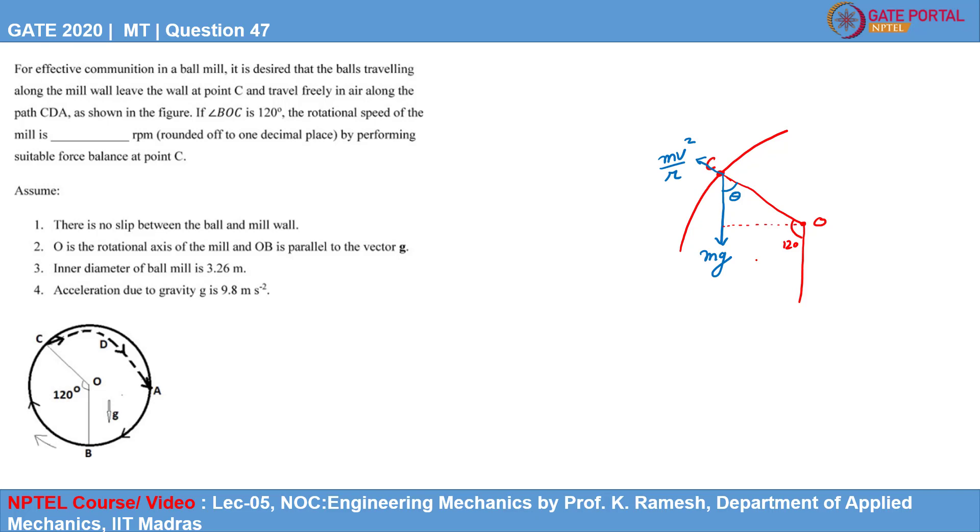If you draw a horizontal, so this will be 90 degrees. So remaining is 30 degrees, this is 90. Sum of internal angles is 180, so this theta will become equal to 60 degrees.